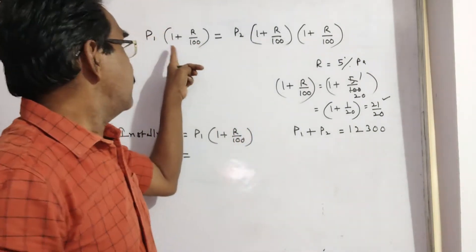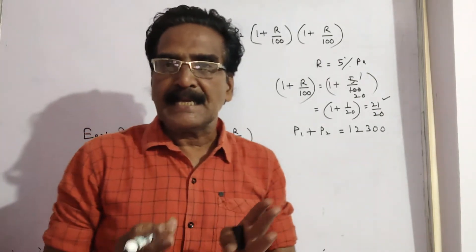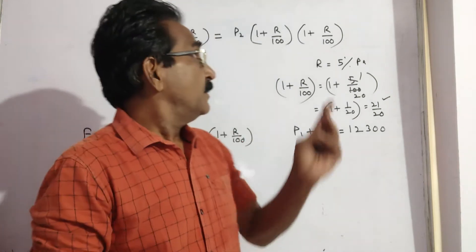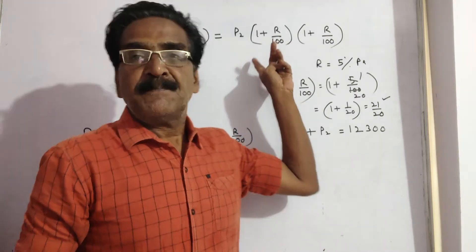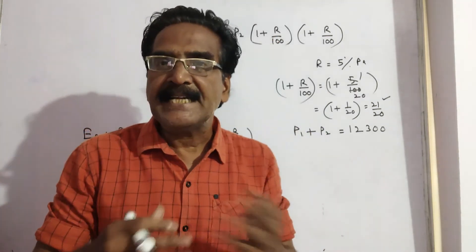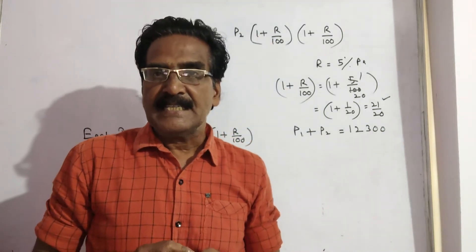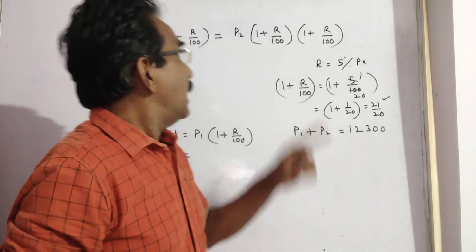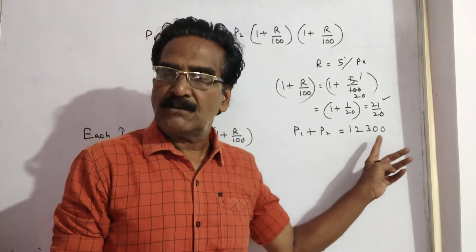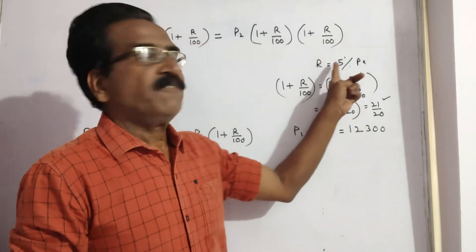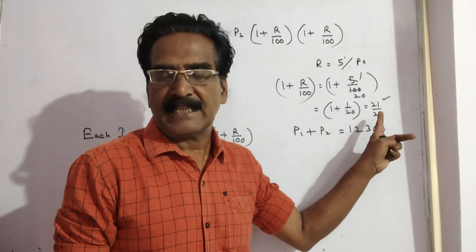This is the first installment — the installment paid after one year — where P1 is the present worth of that installment. Similarly, P2 into (1 + r/100)² is the installment paid at the end of the second year, where P2 is the present worth of the second installment. We know the total present worth: P1 plus P2 equals 12,300. Here r is 5% per annum, so 1 + r/100 equals 21/20.